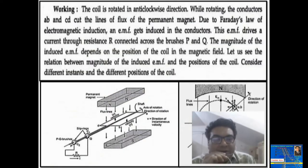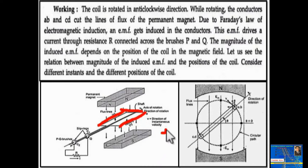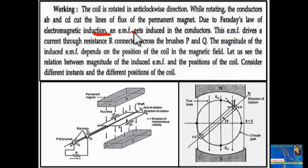The working is demonstrated here. The coil is rotated in anti-clockwise direction. This is the rectangular coil with side AB and side CD. This is the shaft, and whenever this coil is rotated in anti-clockwise direction by a prime mover externally connected to the shaft, an induced EMF is produced. While rotating, the conductors AB and CD cut the lines of flux of the permanent magnet, and due to Faraday's law of electromagnetic induction, EMF gets induced in the conductor.